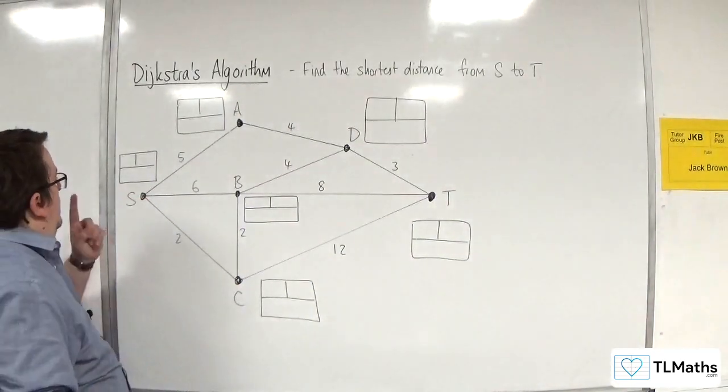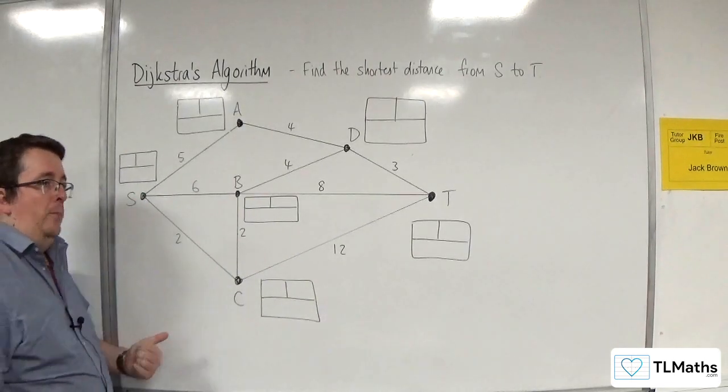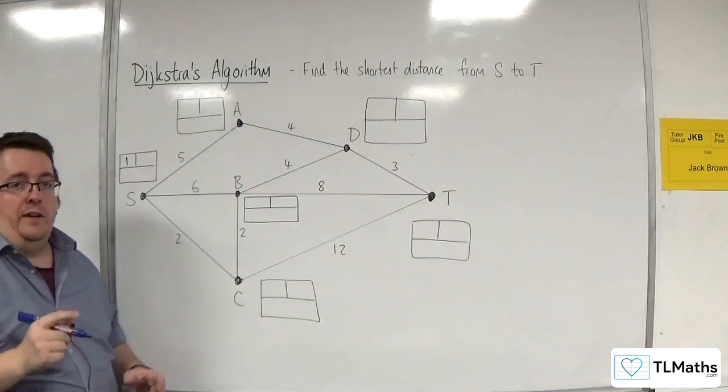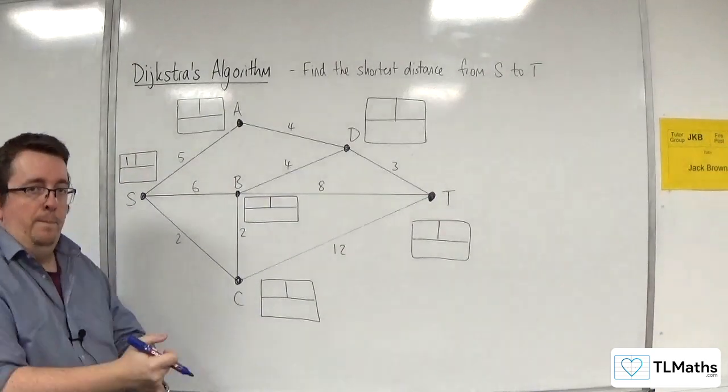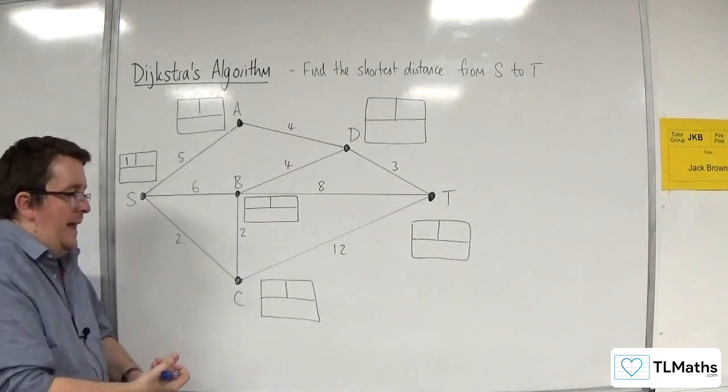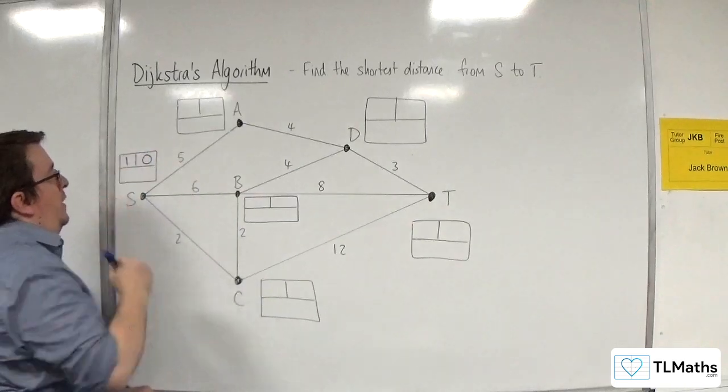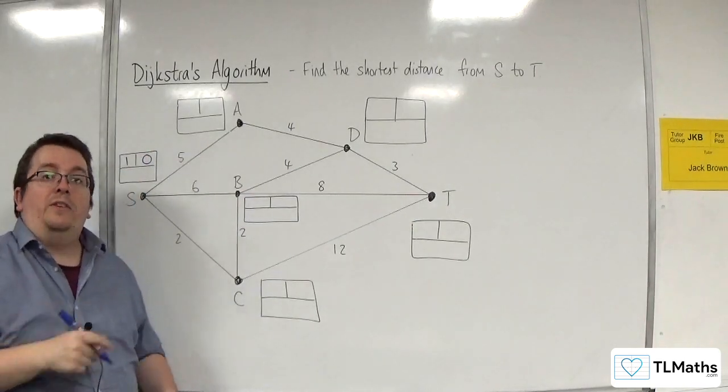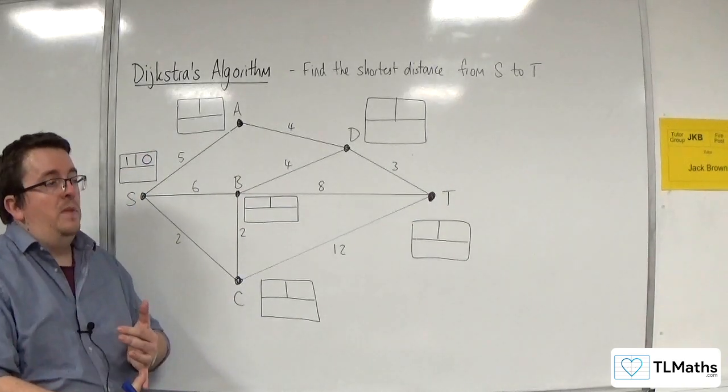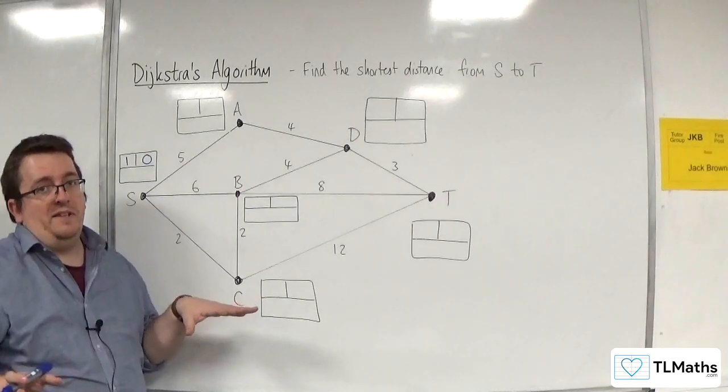Now, we're starting from S. So the order of labeling goes in the top left box. It's the first one that I've considered, so I'm going to label it with one in the top left. And because at S I've gone zero distance, I will put zero in the top right hand box because that's my final value at S. There are no working values to consider, so that box is just left empty.